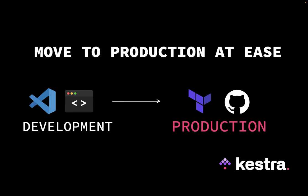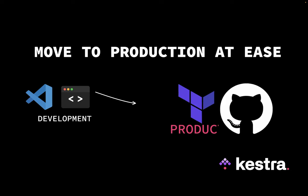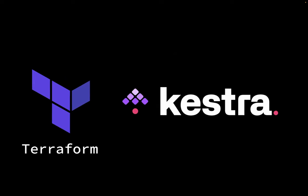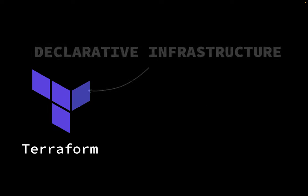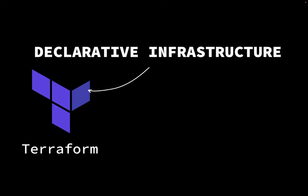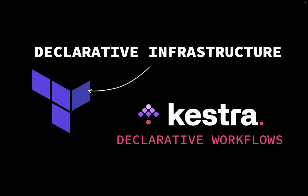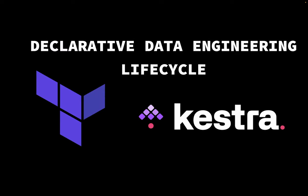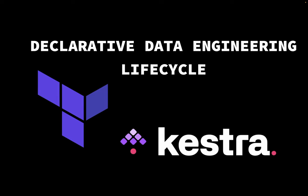There are many great tools that facilitate moving from development to production with ease, such as Terraform and GitHub Actions. For now, we'll focus on two tools: Terraform and Kestra. Terraform is an infrastructure as code tool to declaratively manage environments and the underlying cloud infrastructure. Kestra is an orchestrator to manage data workflows. Both tools use declarative configuration and when used together, they provide a great foundation to manage the data engineering lifecycle.